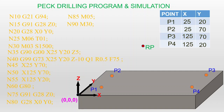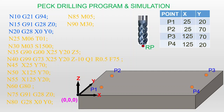Now let us see the program. The first codes are G21 and G94 — G21 is metric units and G94 is feed per minute. Next is G91, G28, Z0, which sends the tool to the home position or reference point. Then G91, G28, X0, Y0 sends the workpiece to the reference point.